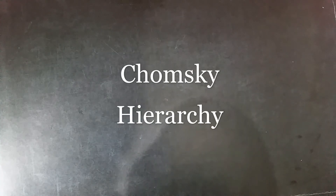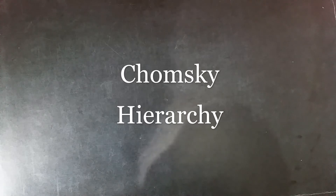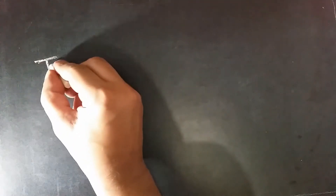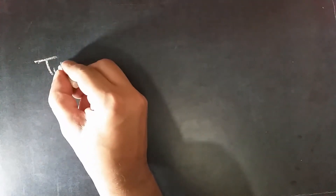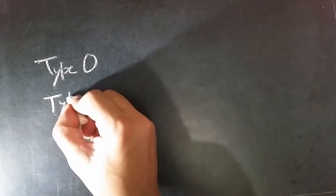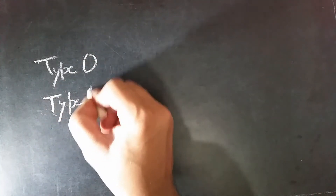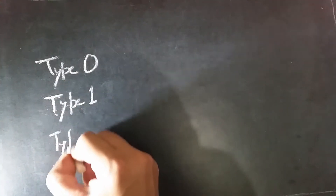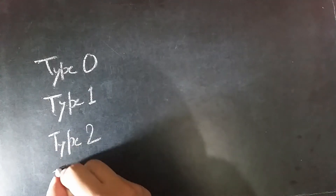Hi everyone. Today we are going to be talking about Noam Chomsky's classification of languages. According to Noam Chomsky, there are four types of grammars: type 0, type 1, type 2, and type 3.